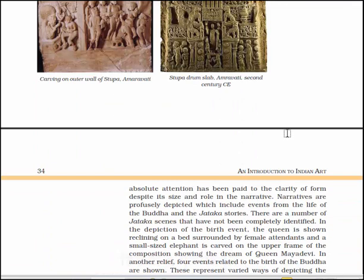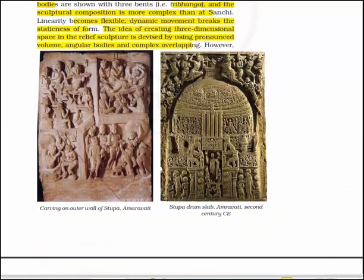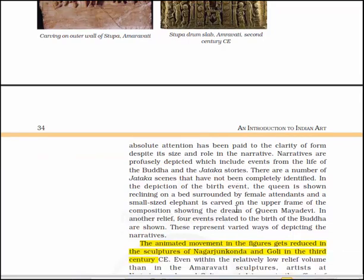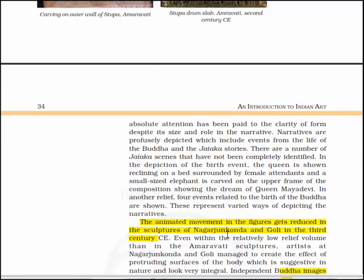Absolute attention has been paid to the clarity of form despite its size and role in the narratives. Here you will see the carving on the outer wall of the Stupa at Amaravati. The narratives are profusely depicted, including events from the life of Buddha and Jataka stories, and there are a number of Jataka scenes that have not been completely identified. In the depiction of birth events, the queen is shown reclining on a bed surrounded by female attendants, and a small-sized elephant is carved on the upper frame showing the dream of Queen Mayadevi. In another relief, four events related to the birth of Buddha are shown, representing varied ways of depicting narratives.